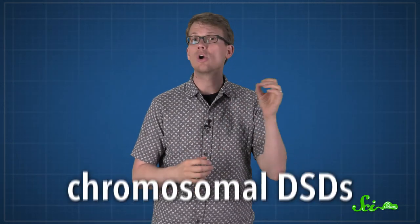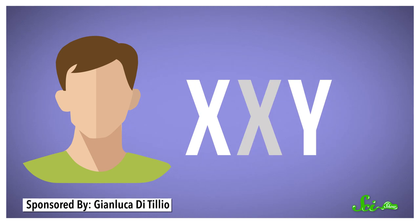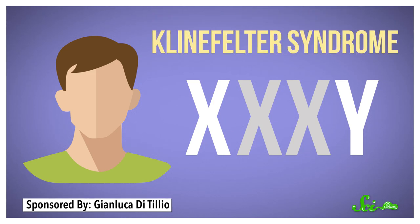Some kinds of intersex conditions are known as chromosomal DSDs, and in humans, they're linked to an unusual combination of X and Y sex chromosomes. If an XY individual has an extra X chromosome, for example, so they're XXY or even XXXY, the result is a condition known as Klinefelter syndrome.